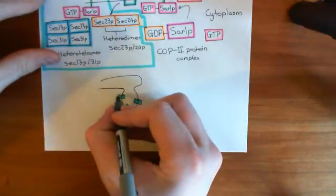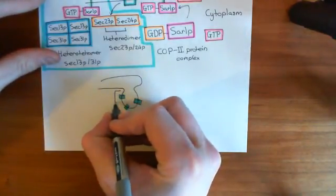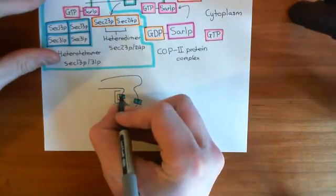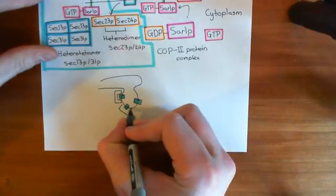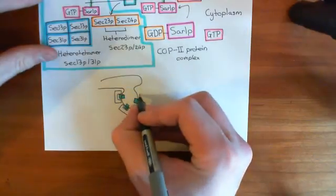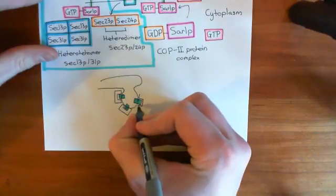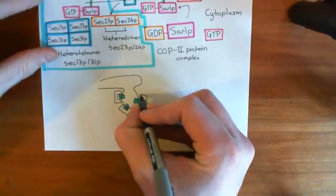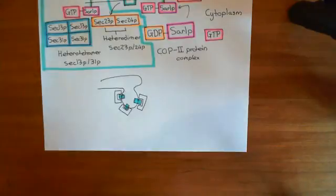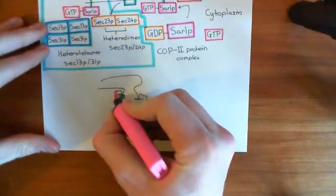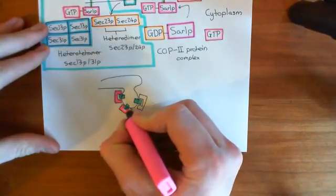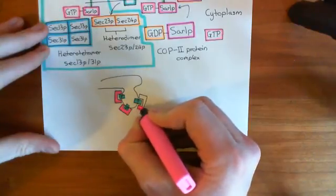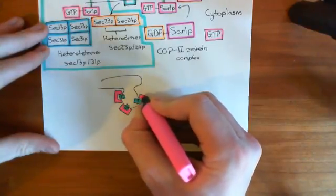And then you have these COP protein complexes, which I'll draw as these massive great things binding around the cargo protein here. And, basically, when the COP-2 starts doing this, what it ends up doing is pinching off the membrane, forming this vesicle. So in COP-2, we're representing this purple colour here. So this is COP-2. And here's more COP-2. So in purple is COP-2.